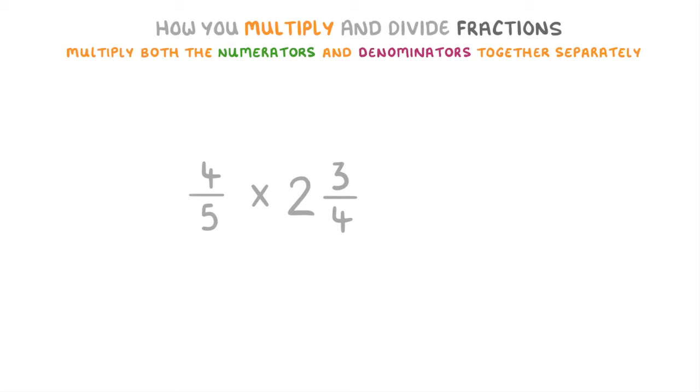So to do that we multiply the 2 by the 4 to get 8, and then add that 8 to the numerator of 3 to get a new numerator of 11. So we get an improper fraction of 11 over 4.